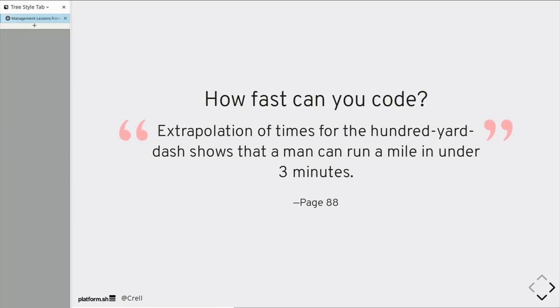Extrapolation of time for the 100-yard dash show that a man should be able to run a mile in under three minutes. The current world record is 3 minutes 43 seconds. Because you can't run at 100-yard dash speeds for a whole mile. Humans can't do that. Longer distances, you're going to run slower.